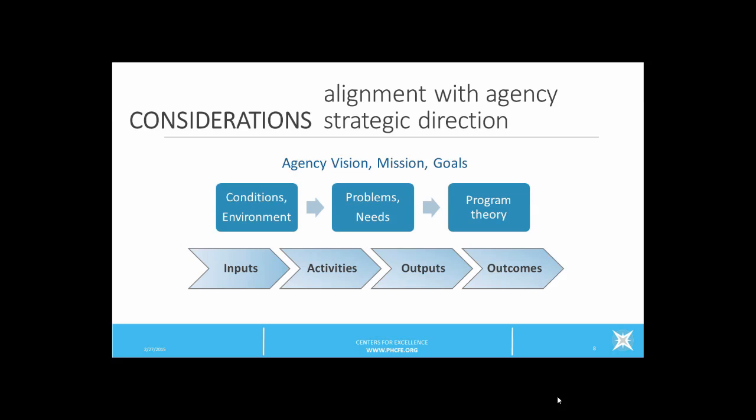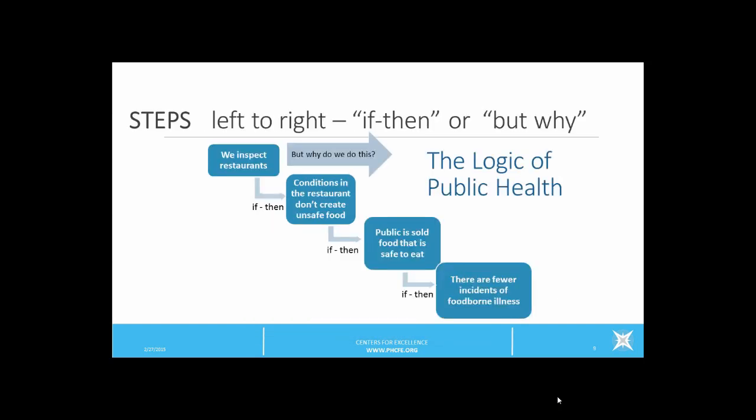These are the central parts of a logic model: inputs, activities, outputs, outcomes, and measures. A common way to develop a logic model is from left to right. Say the condition or problem is unacceptable rates of foodborne illnesses, and the activity is restaurant inspections. Start by asking: why do we inspect restaurants? The answer is we inspect restaurants so that conditions in the restaurants don't create unsafe foods. Or you can use if-then logic, tracking from left to right: if we inspect restaurants, then conditions in the restaurant won't create unsafe food; if conditions in the restaurant don't create unsafe foods, then the public is sold food that is safe to eat; and if the public is sold food that is safe to eat, then there are fewer incidents of foodborne illnesses.